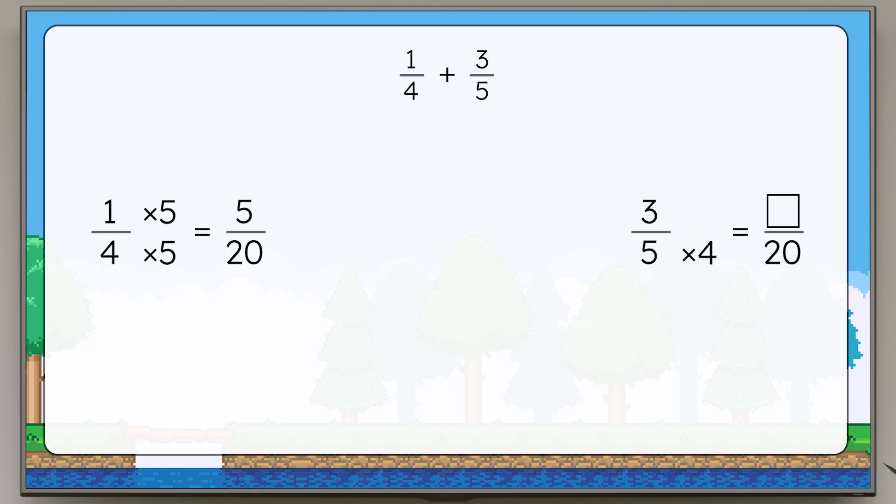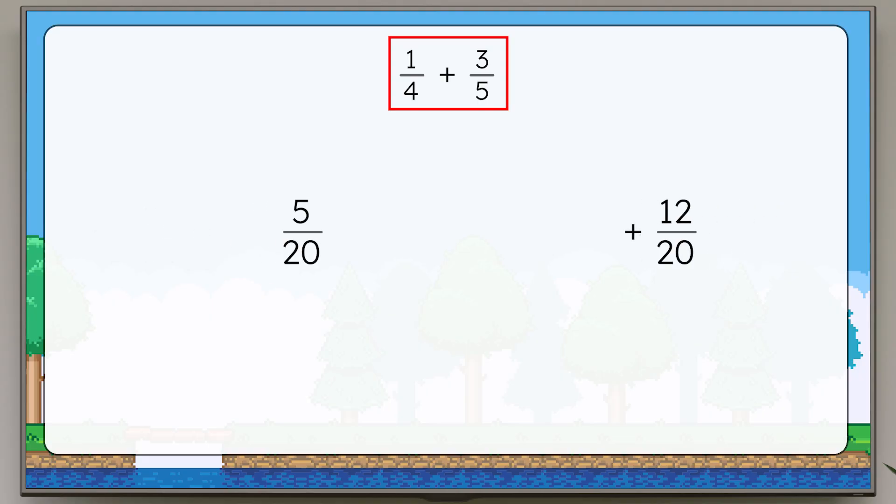Five times four equals twenty, and three times four equals twelve, so three-fifths is equivalent to twelve-twentieths. Instead of just changing one fraction like our earlier examples, we needed to change both of them so they each have the same denominator. Now we can add five-twentieths plus twelve-twentieths, which equals seventeen-twentieths.